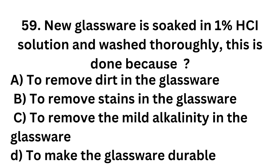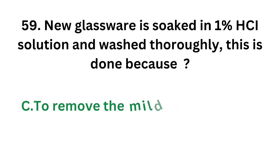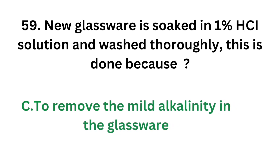Question number 59. New glassware is soaked in 1% HCl solution and washed thoroughly. This is done because: Option A - To remove dirt in glassware; Option B - To remove stains in the glassware; Option C - To remove the mild alkalinity in the glassware; Option D - To make the glassware durable. The correct answer is Option C, to remove the mild alkalinity in the glassware. The mild alkalinity of new glassware should be removed by soaking in 1% HCl.